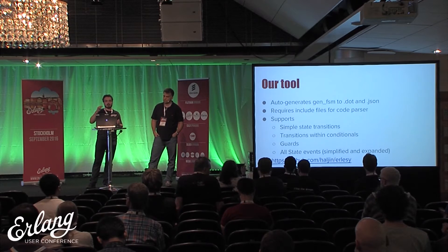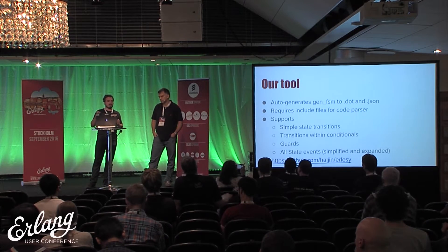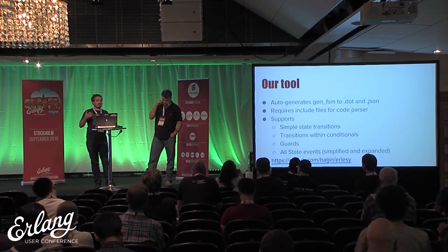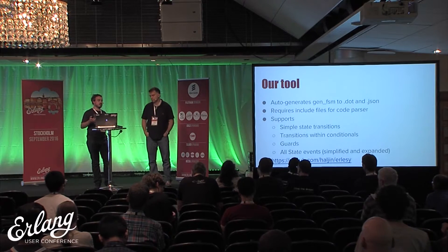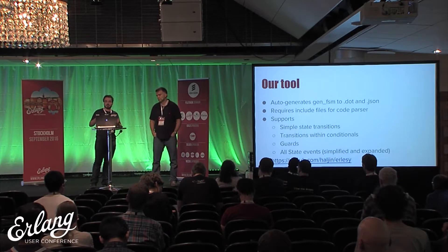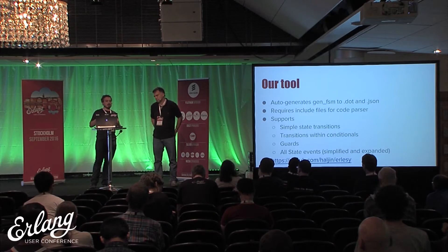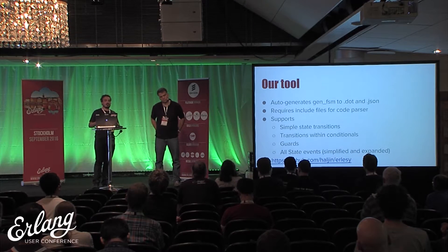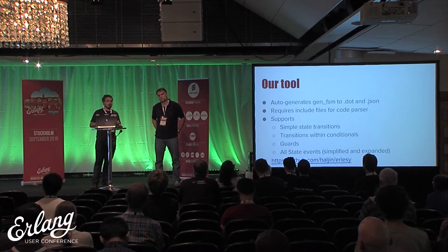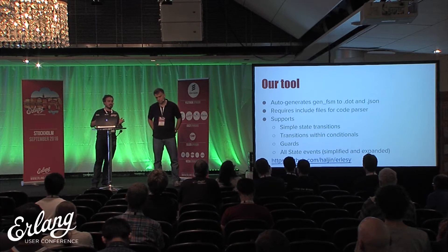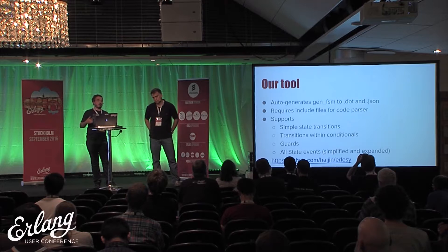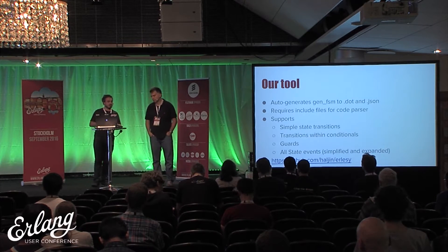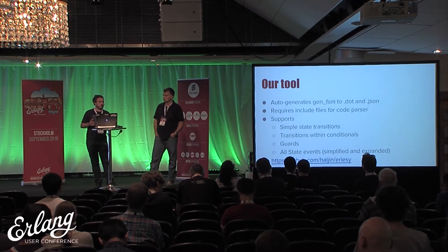Then it goes through that tree trying to find out what your states are. The states we know from the GenFSM behavior are very well defined — we know exactly what a state function has to return. There are only so many possibilities that a state function can return. So if we detect that this actually returns the next state tuple, this is probably a state. Going back that way, we can figure out what the states are. Of course, this is a much more complex problem when we have case statements inside the state that change how the transitions go, or when the state is actually being computed by another function and returned — there are a lot of crazy things you can do which are much harder to analyze.